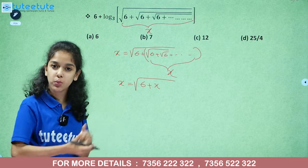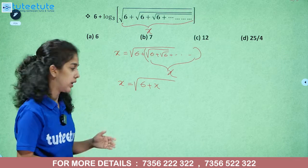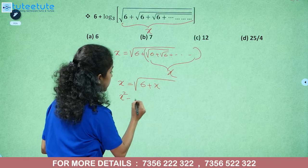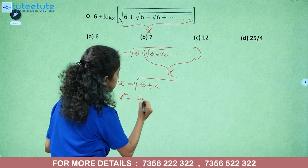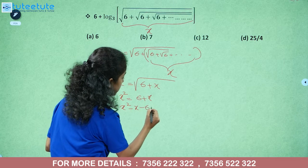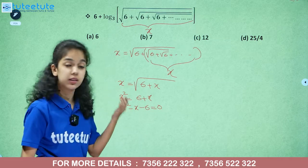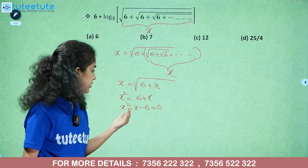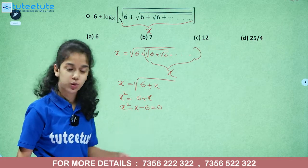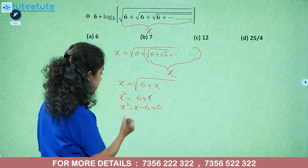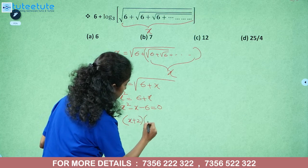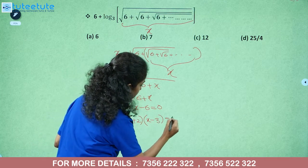Squaring both sides, we get x squared equals 6 plus x. So x squared minus x minus 6 equals 0. You can solve this using the quadratic formula or factorization. Factorizing: x plus 2 into x minus 3 equals 0.